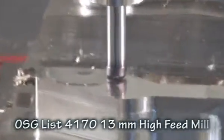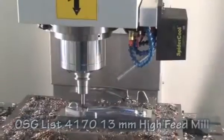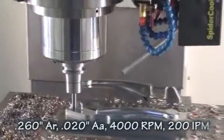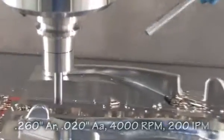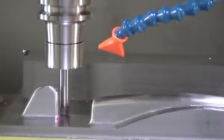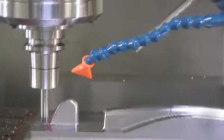The final contour takes shape quickly using OSG's List 4170 High Feed Mill. This super high performance end mill is made for long life and high productivity, taking high chip loads and a wide curve.